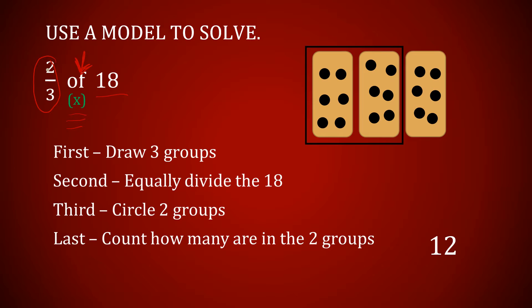We've got four short and easy steps to remember. First, we want to draw three groups. Why am I drawing three groups? Because my denominator says I have two out of three groups. The denominator tells me how many groups I have. Looking at this model, I have one, two, three groups — we've got three domino-looking pictures.